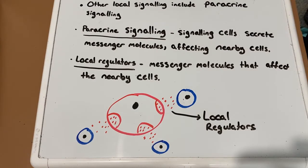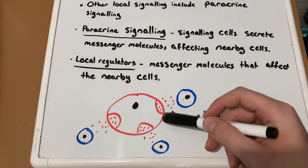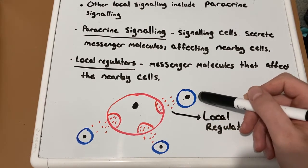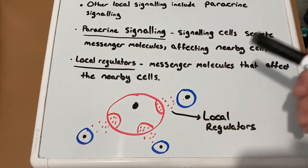Other examples of local signaling include signaling cells secreting messenger molecules. These messenger molecules will only travel short distances for local signaling and will affect cells in the area — these are known as local regulators. One type of local regulator is growth factors, which cause nearby cells to grow in size and divide. A cell will release these growth factors, acting on nearby cells and affecting many at a time, and this is known as paracrine signaling.